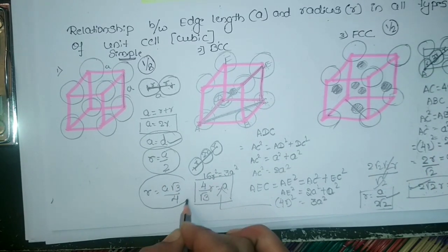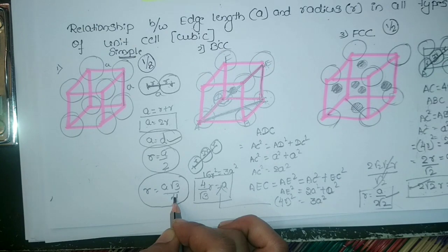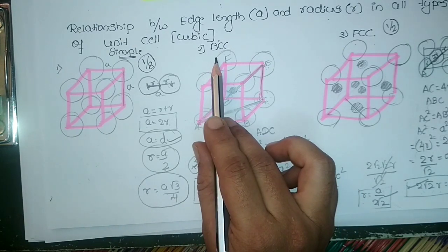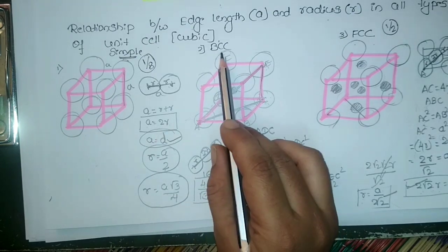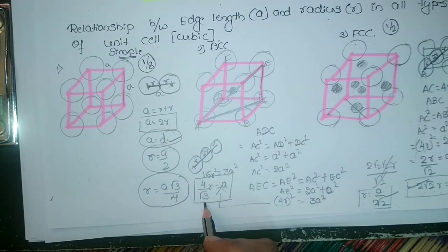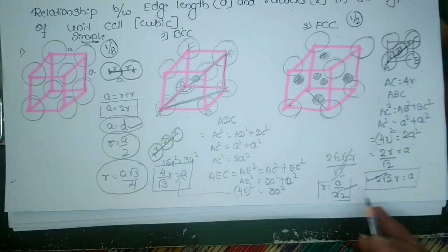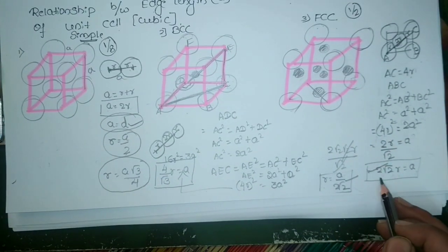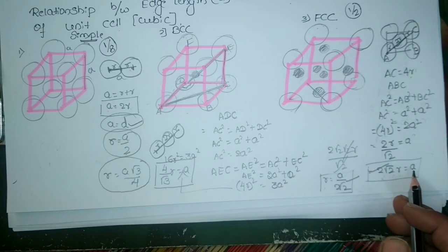To summarize the edge length and radius relations for all three cubic unit cells: for simple cubic, A = 2R; for BCC, A = 4R/√3; and for FCC, A = 2√2R. These are very important formulas. We will now use them to solve exam problems.